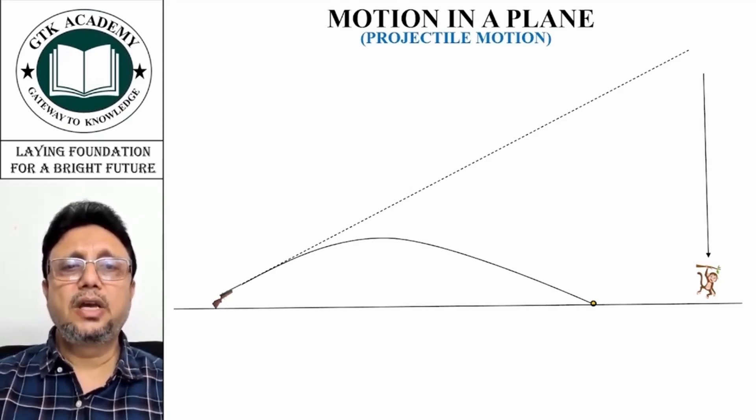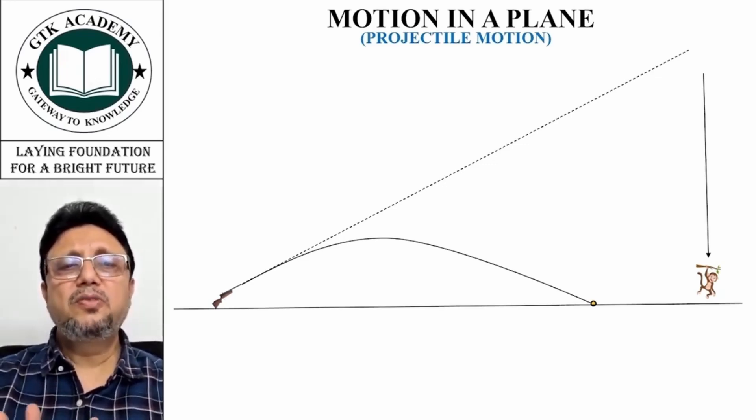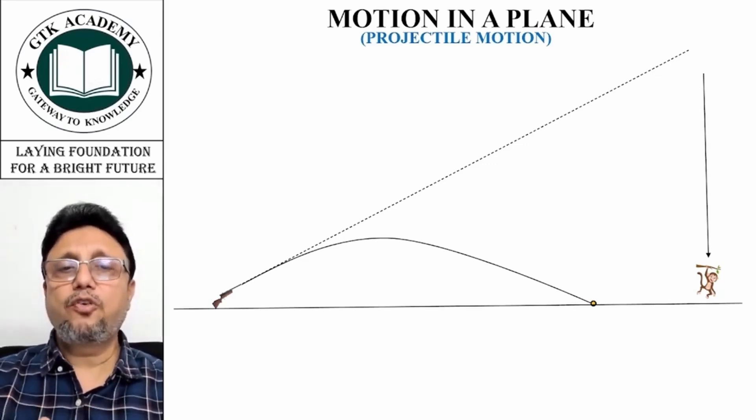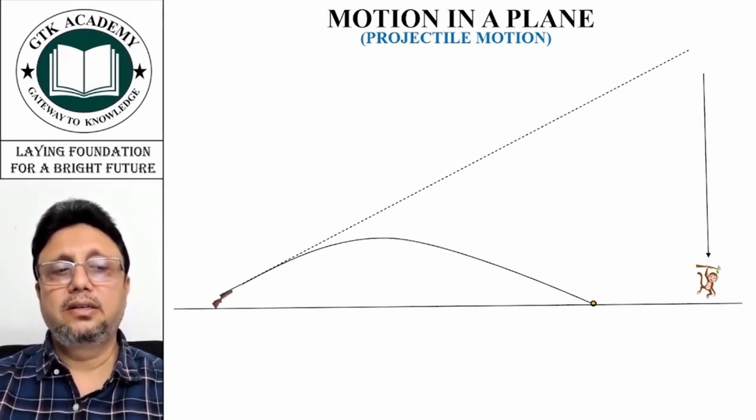It is not possible for us to take a direct aim beyond 70 meters. So when we are taking an aim, that means we are very close and the monkey is within the range of our shot. So the monkey is bound to get hit.